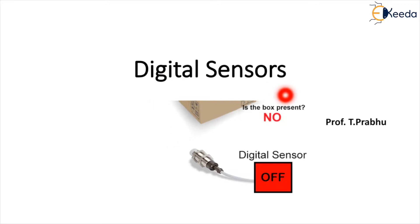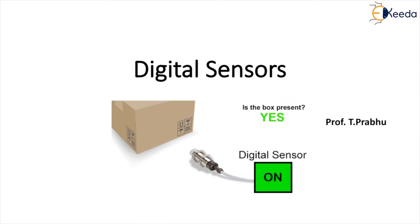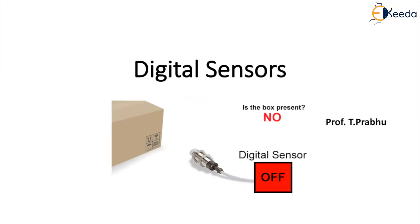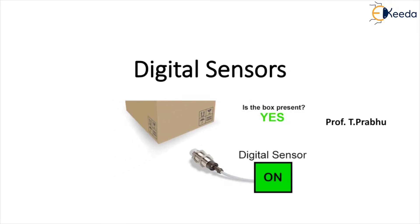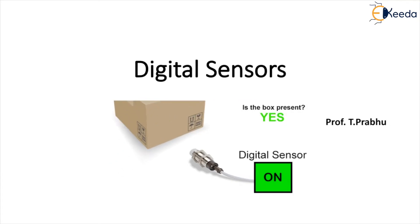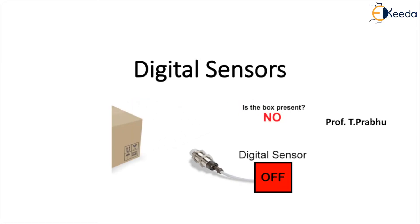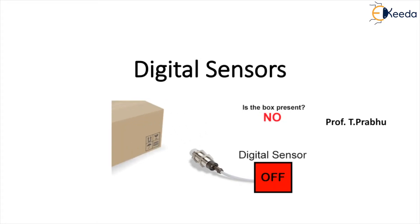The word digital means either on or off. A digital sensor is an electronic or electrochemical sensor where data is digitally converted and transmitted. Sensors are often used for analytical measurements, that is the measurement of chemical and physical properties of liquids.